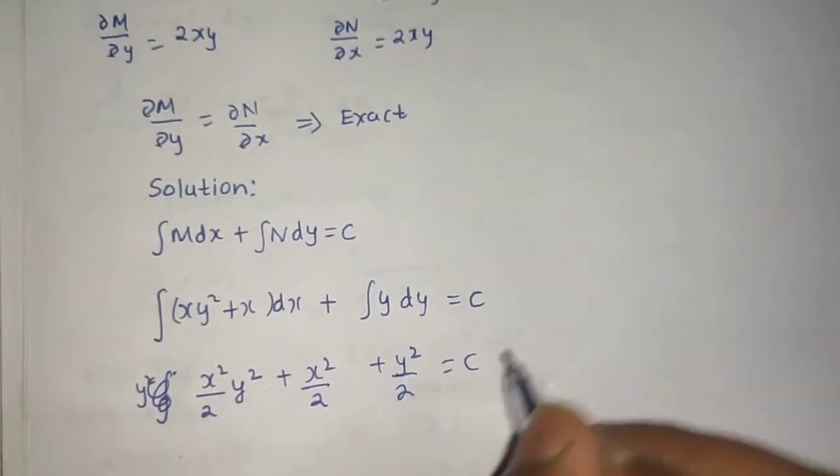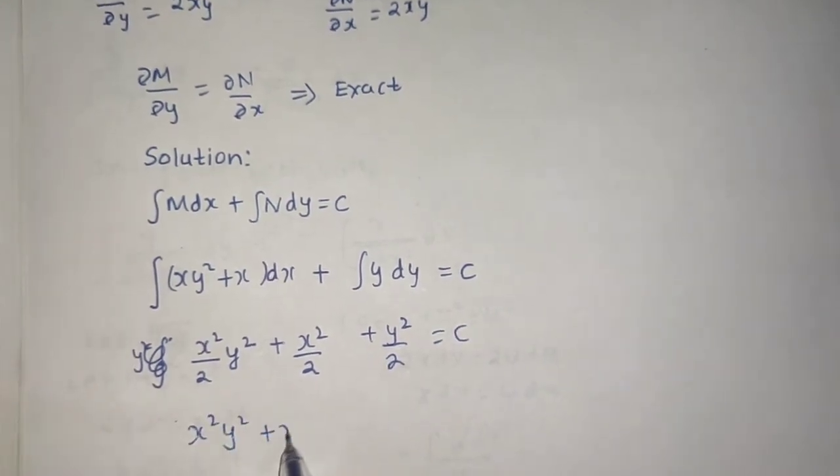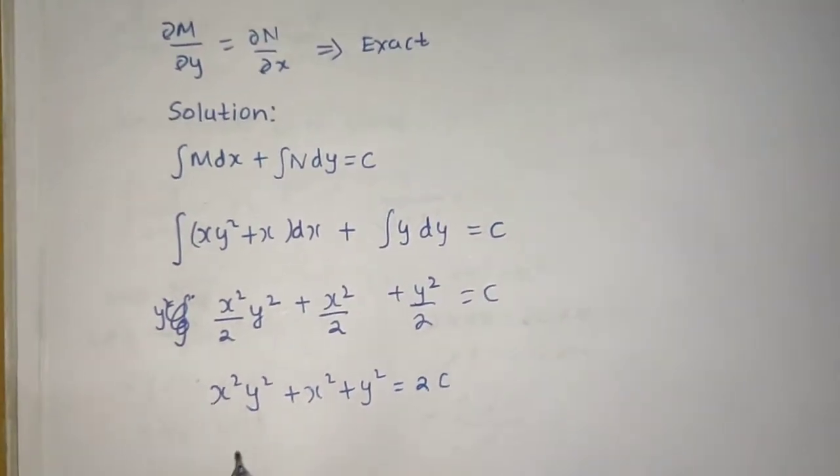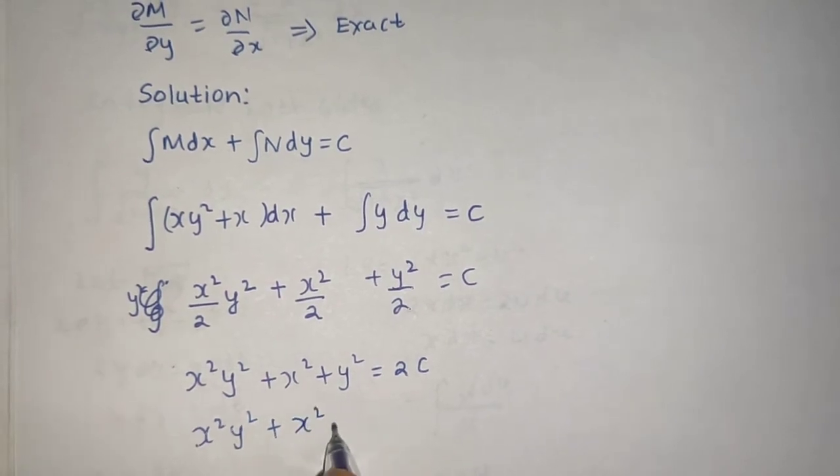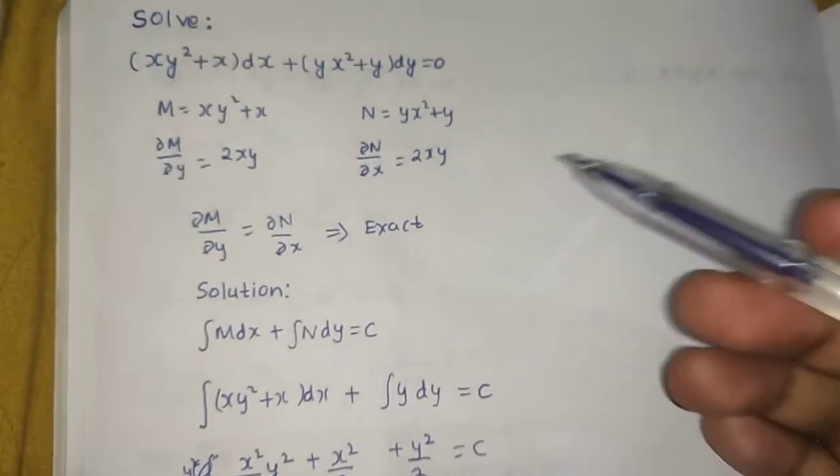Take all the 2s to the right hand side. You are getting x²y² + x² + y² = 2C. You can name this as another constant C₁. Look how easy it was.